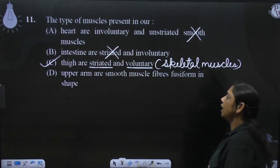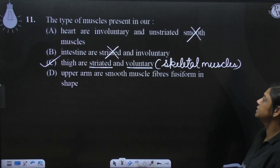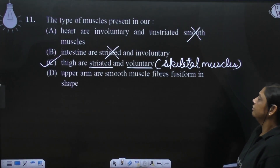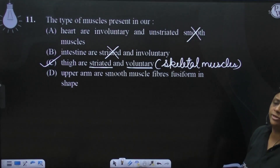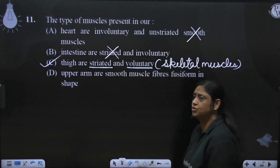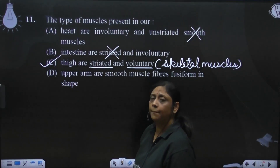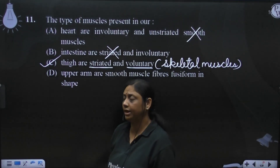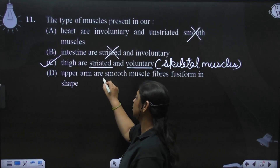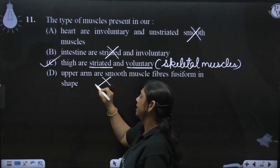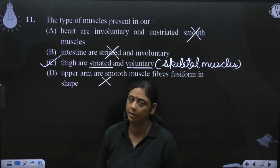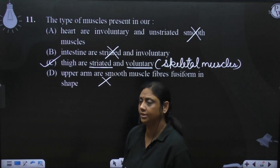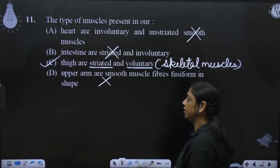Upper arm are smooth muscle fiber? No. Arm wala region hai, limb region hai. Waha par smooth muscle fiber absent hootay hai. Waha par striated muscle fiber hi paay jatay hai. Got it? (In the arm/limb region, smooth muscle fibers are absent; only striated muscle fibers are found there.)